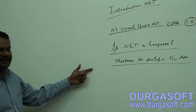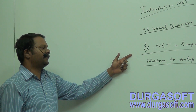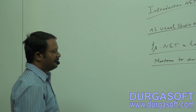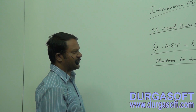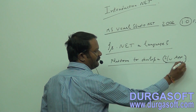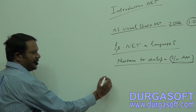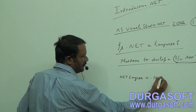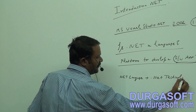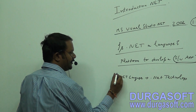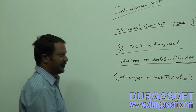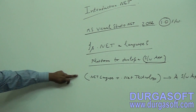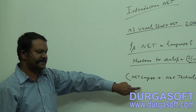.NET is just a platform to develop a software application. Why do we use .NET and what are the technologies involved? For a software programmer to develop any type of software application, he needs one .NET language and one .NET technology. The combination of these two is called a software application.